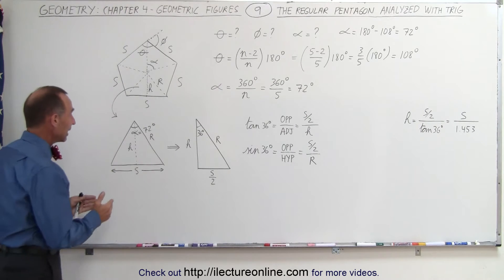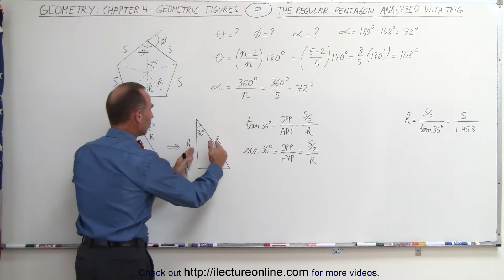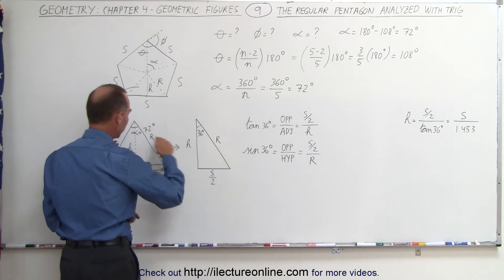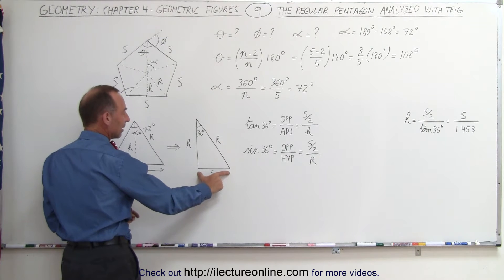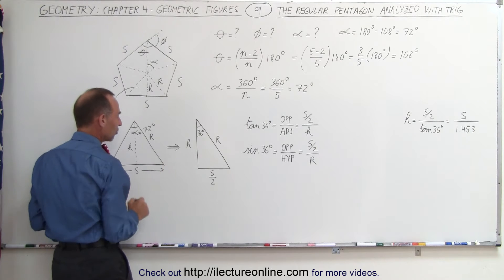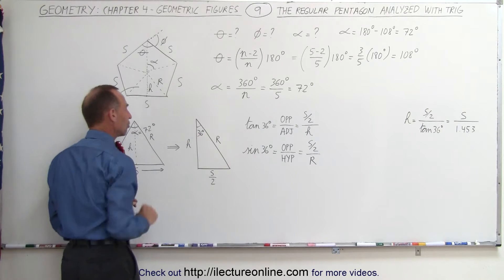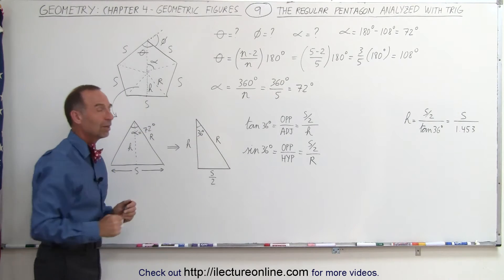Now what we've done further is we've taken each of these triangles divided into a half, so that here's the drawing where we have R, this is the distance R here, half the side of the regular pentagon, which is the half of the side of the base of the triangle, and then we have here the height of the triangle, which means that this angle here will be half of 72 degrees or 36 degrees.